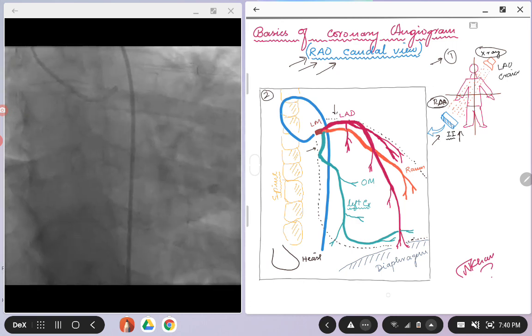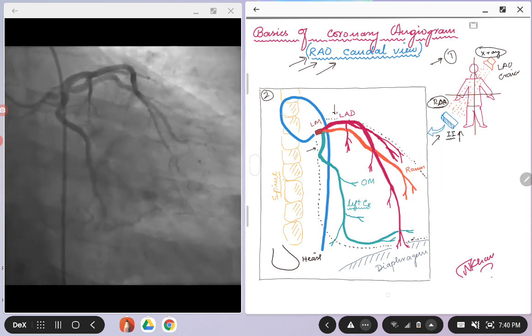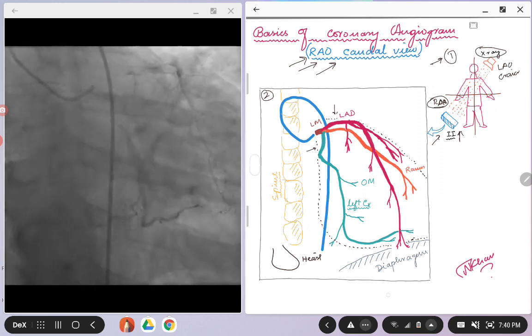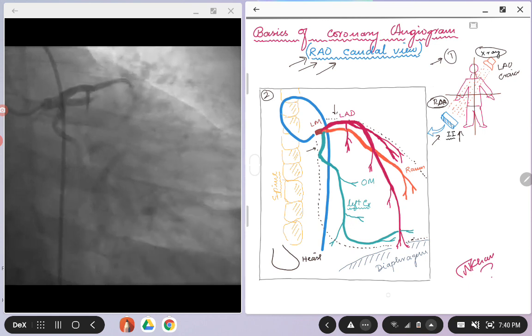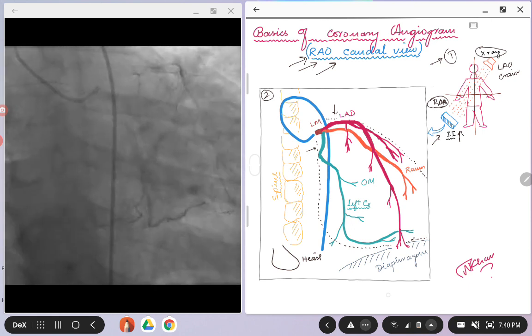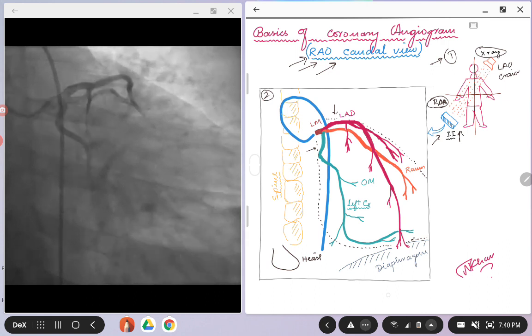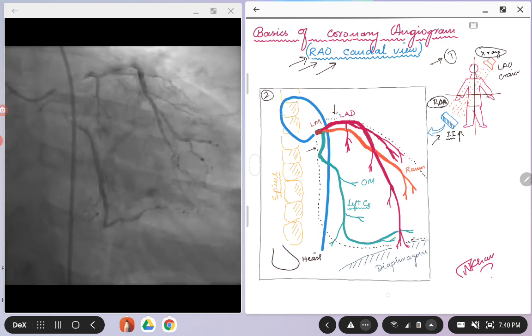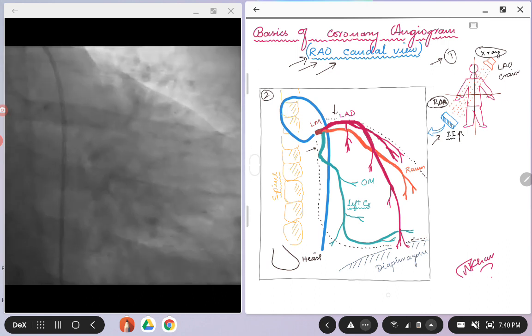Knowing where the x-ray source is is very important because that way you can identify and appreciate some of the images and other coronary anatomy as well as the other mediastinal structures that we will be going over.